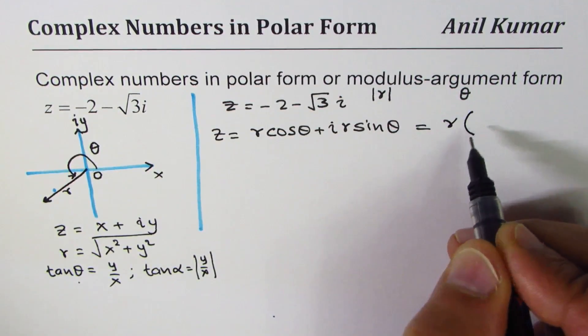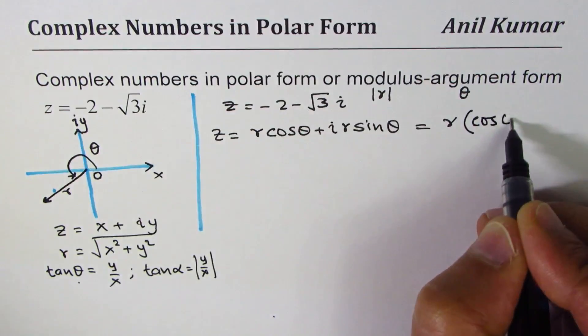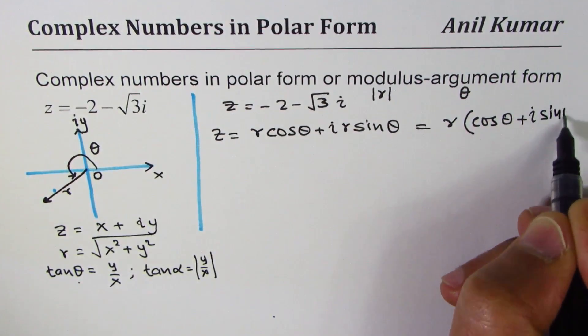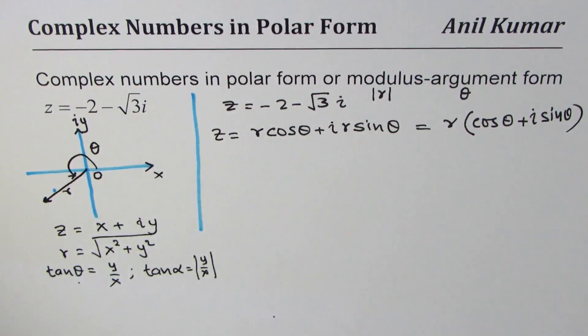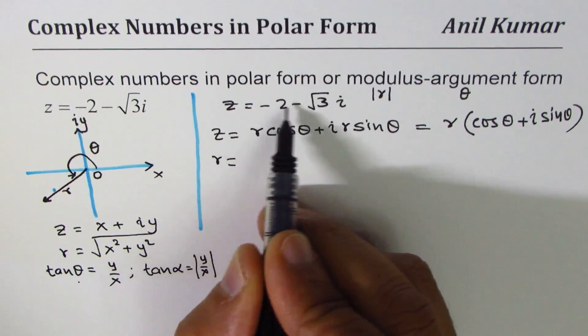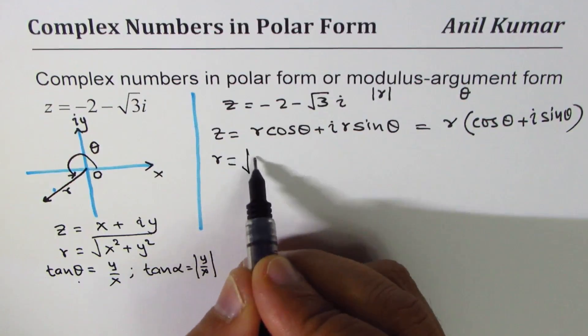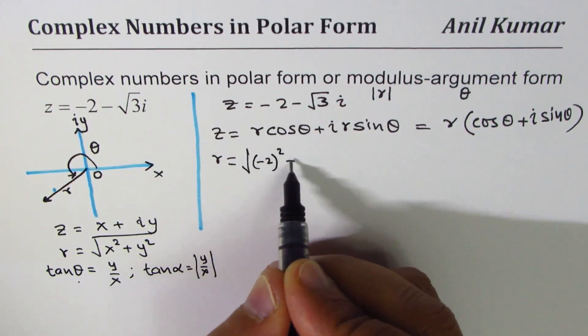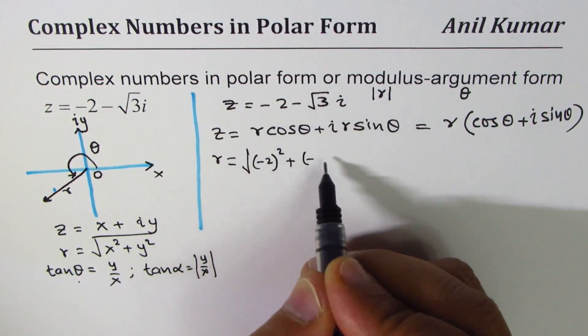Since r is common, it's better to write r as a common factor. It's always written like this: r(cos θ + i sin θ).